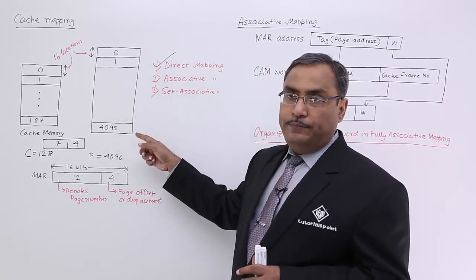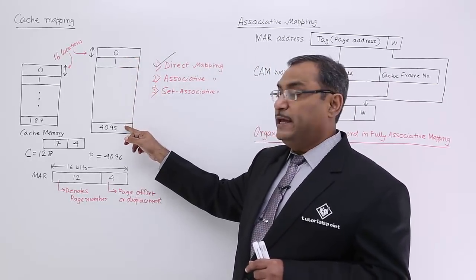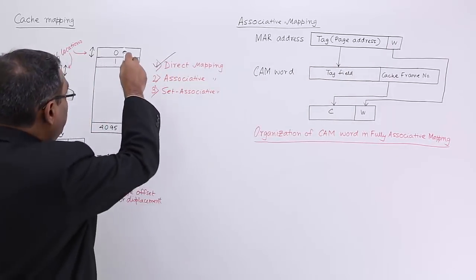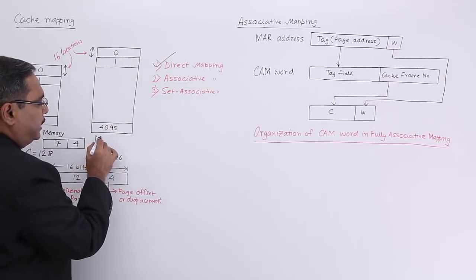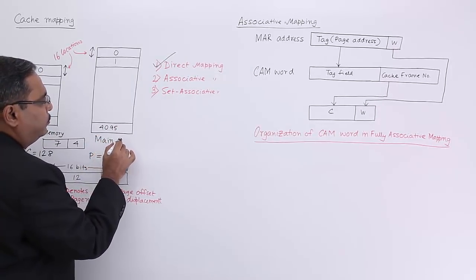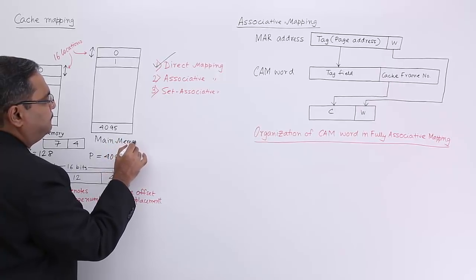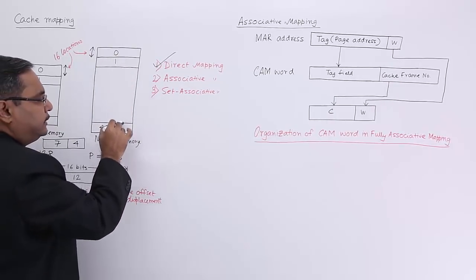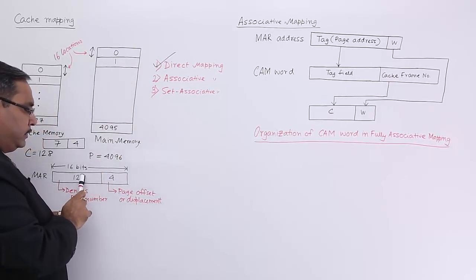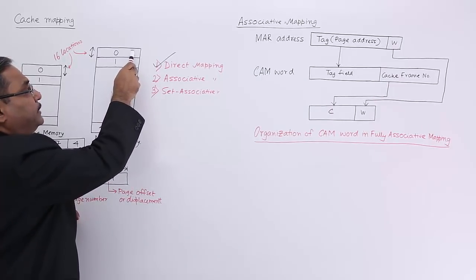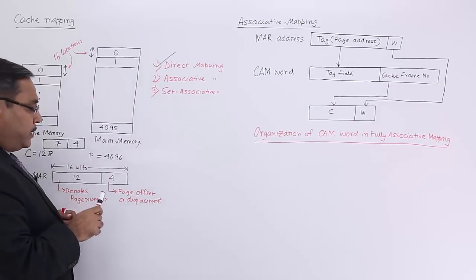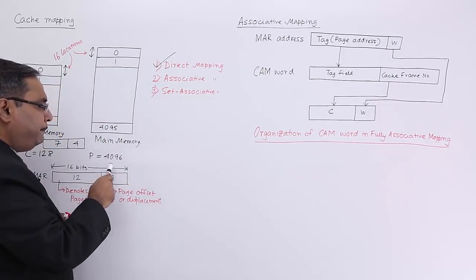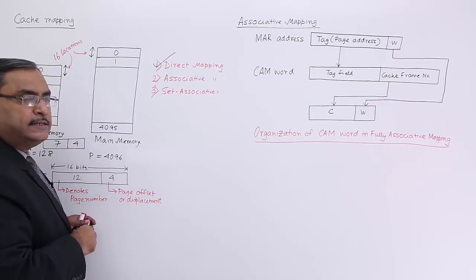This is the problem: we are having 4096 number of pages in the main memory, starting from 0, so the last page number is 4095. How many bits are there to denote the page number? 12 bits. For each and every page, how many locations are there? 16. How many bits will be required to denote the offset? 4. So how many bits will be required in the main memory address? 16.